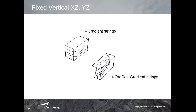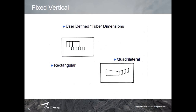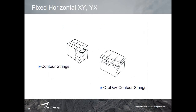In version 2.0, you'll be able to generate stopes based on strings with a gradient — for example, for drainage — and the stopes will be generated respecting that gradient. The user can define a customized framework, and the system will try to use those shapes during the optimization process, also generating output strings to help with the process.